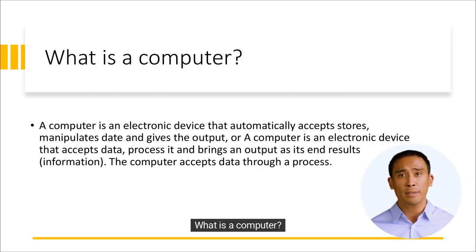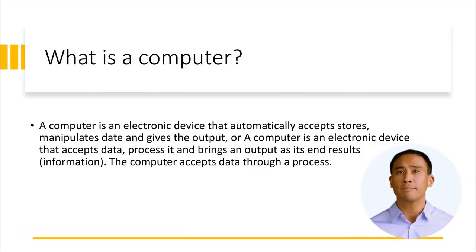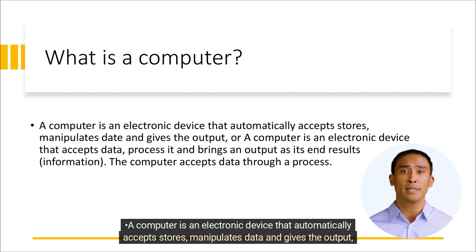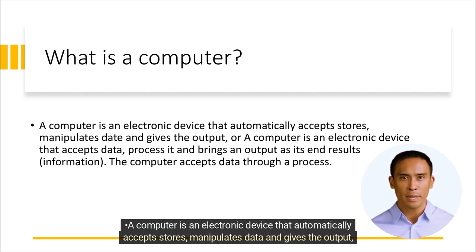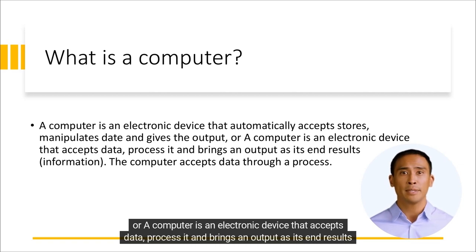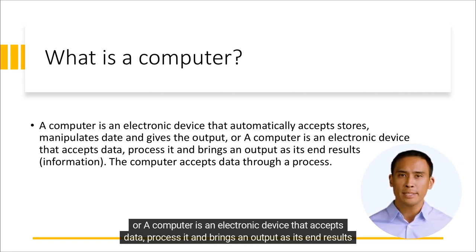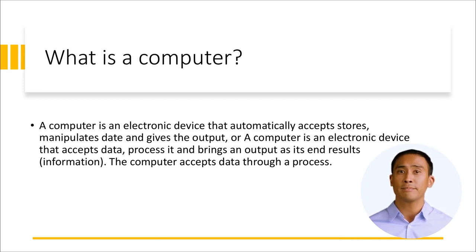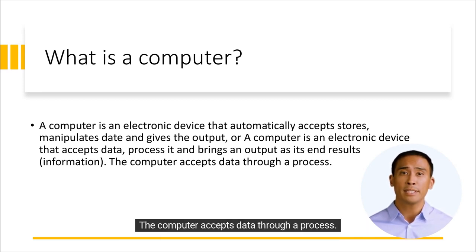What is a computer? A computer is an electronic device that automatically accepts, stores, manipulates data, and gives the output. Or, a computer is an electronic device that accepts data, processes it, and brings an output as its end result — information. The computer accepts data through a process.